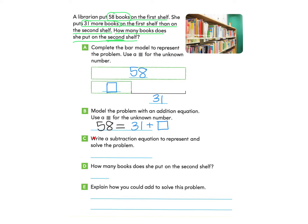Part C asks us to write a subtraction equation to represent and solve the problem. We have our total amount, 58. We know there are 31 books, but we don't know how many books are on the second shelf. So we make a subtraction problem using our big number 58 and take away 31, which is the difference, to find out what our unknown equals.